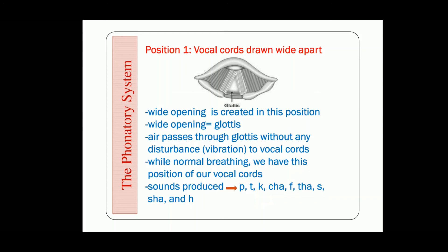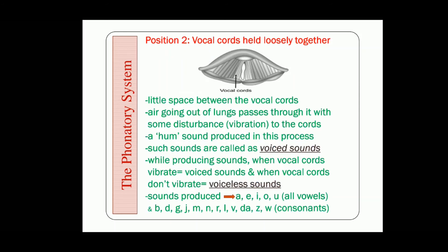This position is taken by the vocal cords at the time of normal breathing. Now let us move towards the second position. In the second position — vocal cords held loosely together — you can see the gap between the vocal cords has decreased. Earlier the gap was very wide; that wide opening is known as the glottis. But here that wide opening has been narrowed, and we can see a little space left between the vocal cords.